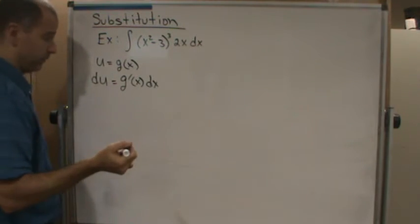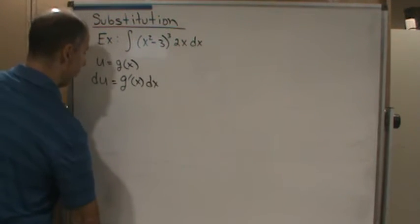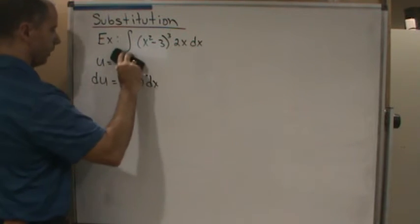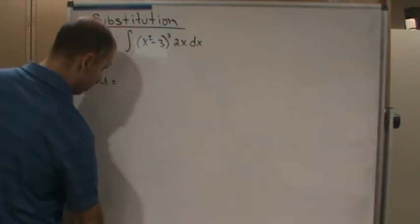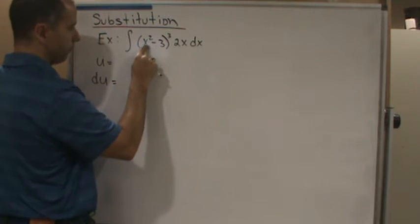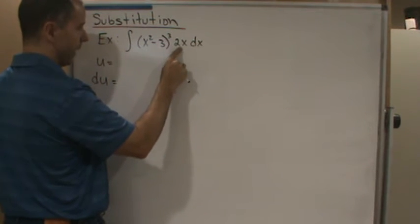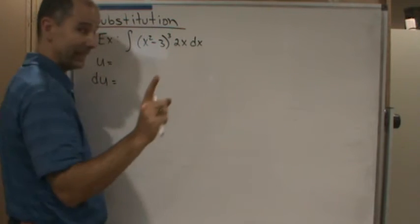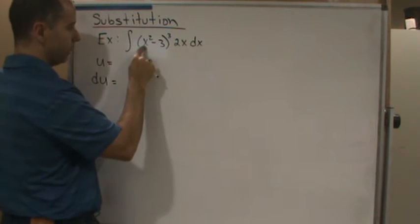Now notice that if I look at x squared here, well the derivative of x squared is 2x, and right there is 2x. Now be careful—I would not make u equal to x squared because I still got this constant in here.